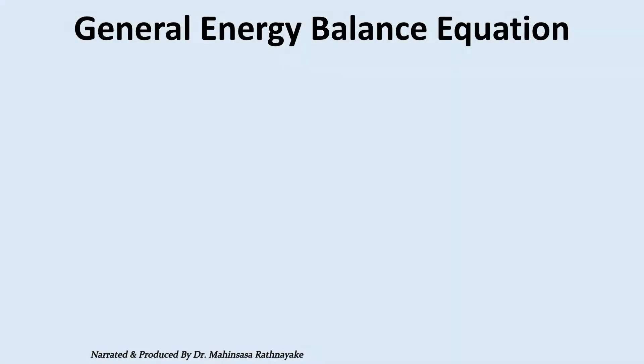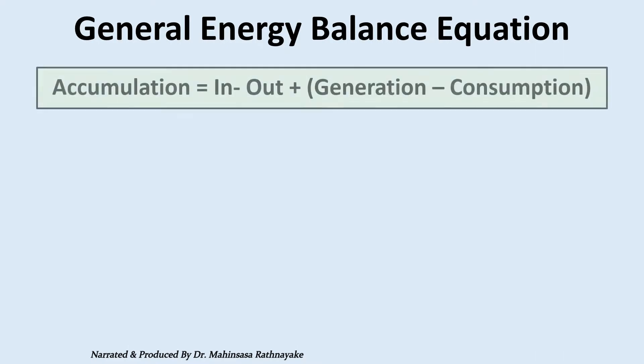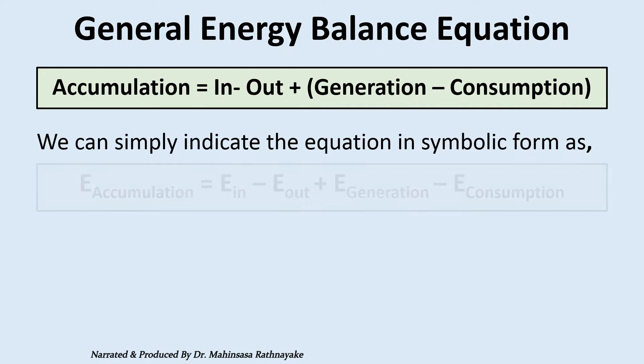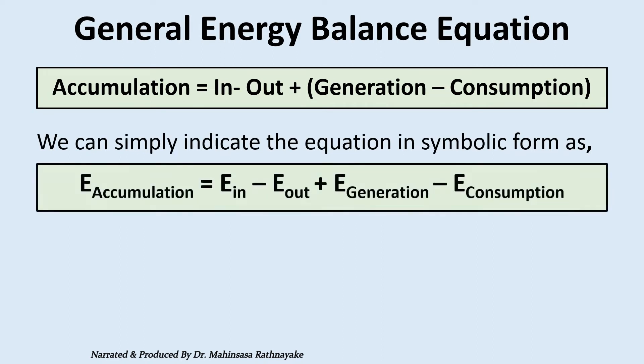The general energy balance equation can be written as: accumulation of energy within the system is equal to transfer of energy into the system through the system boundary, minus transfer of energy out of the system through the system boundary, plus energy generation within the system, minus energy consumption within the system. We can simply indicate the equation in symbolic form as E-accumulation equals E-in minus E-out plus E-generation minus E-consumption.